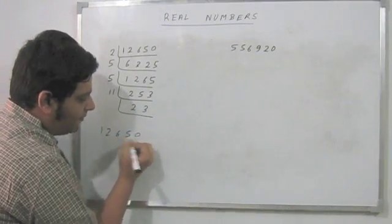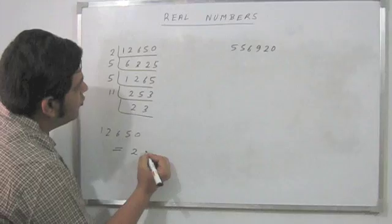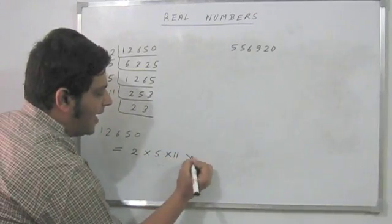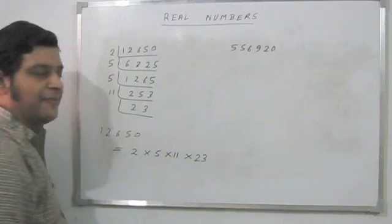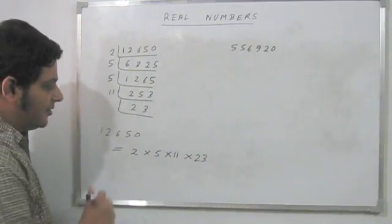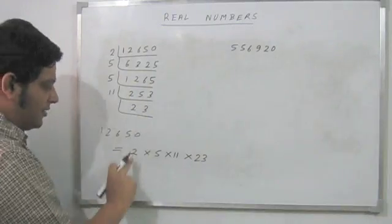So effectively my number 12650 has 2, 5, 11, and 23 as its prime factors.